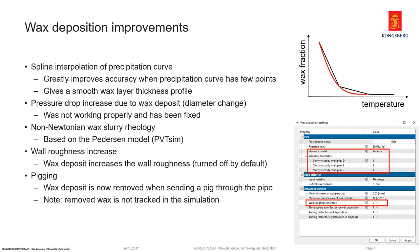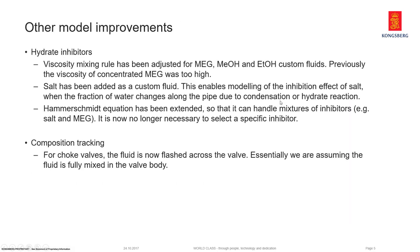Finally, after a wax deposit forms, it was already possible in LaterFlow to remove it by flushing with hot water or oil. We've now added another method to remove wax deposit: pigging. It's possible to send a pig through the pipe and the wax deposit will be completely removed. However, the removed wax is not tracked in the simulation, because we don't have a model to account for the viscosity of large chunks of wax in the oil phase. At least you can now use pigging to clear a pipeline of wax.